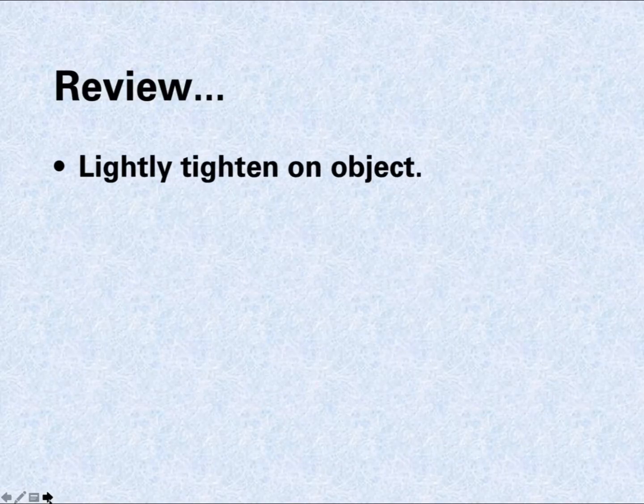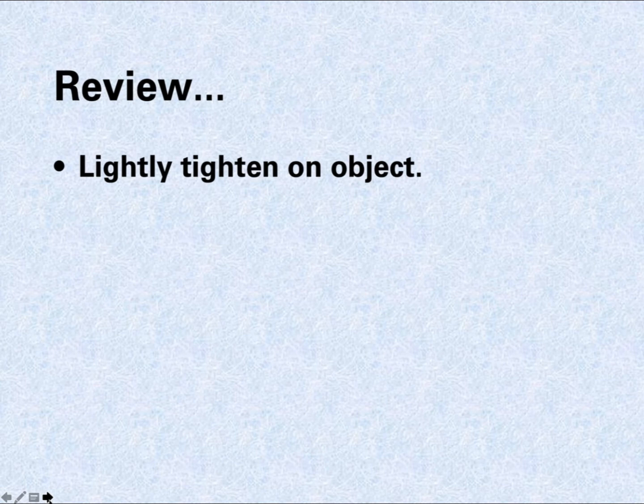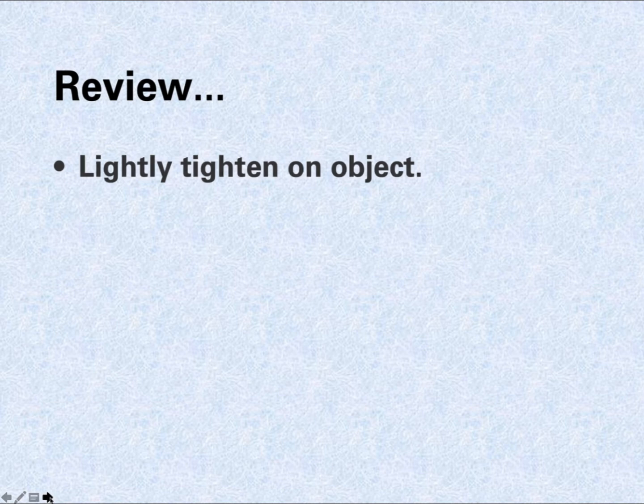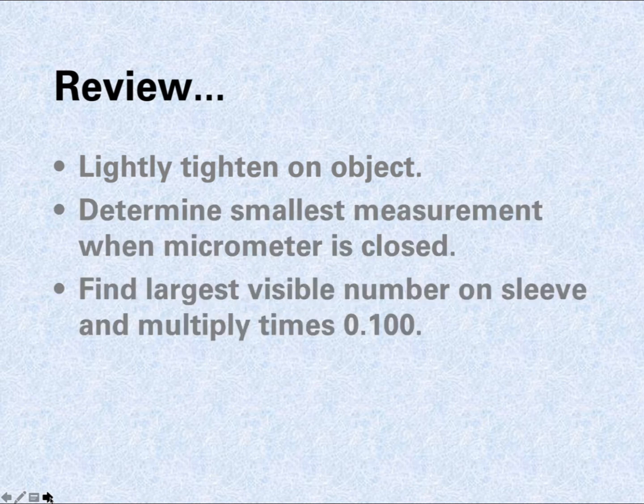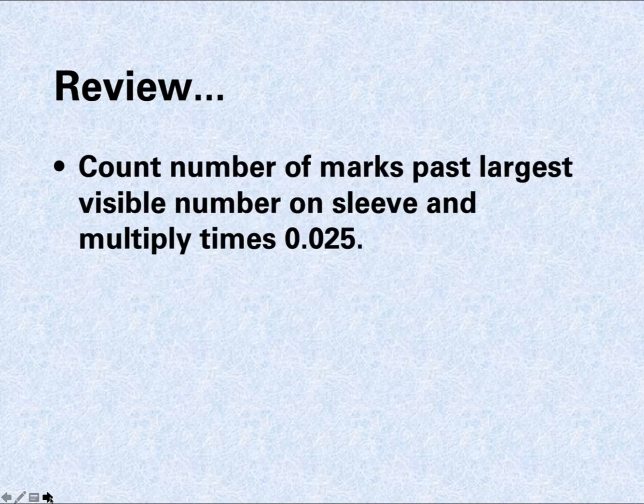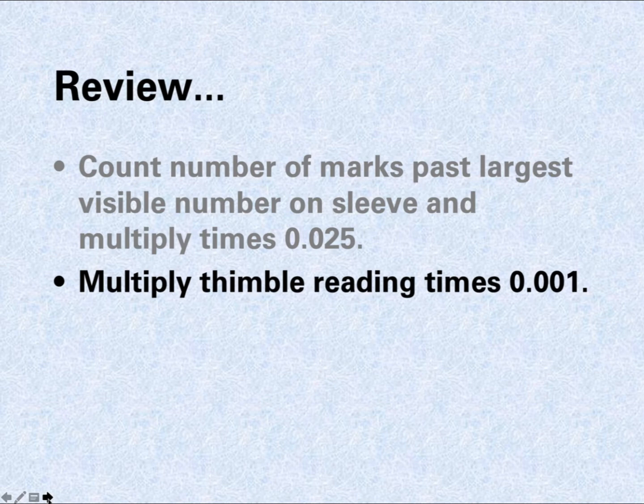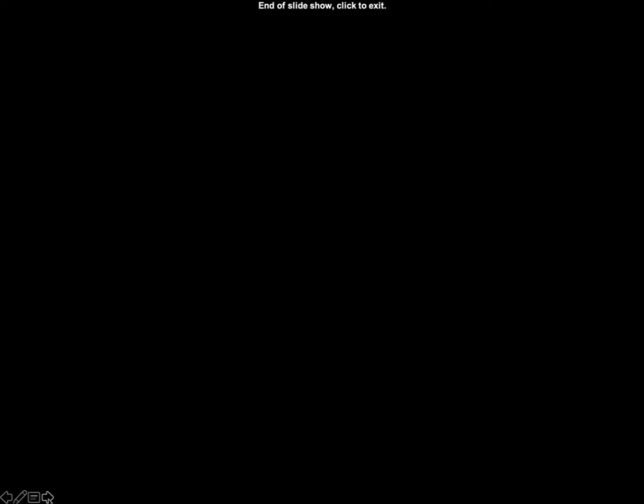So what do we learn here? You lightly tighten on the object. Now, if it's round and I'm going to do one, once we're done with this, I'm going to show you a little techniques because part of it is technique. So lightly tighten on the object. You've got to make sure that the object you're actually clamping it or tightening in the right spot. So if you're doing something round, we've got to make sure that we're square in it, in the highest spot. So we lightly tighten on the object using the friction clutch. Determine the smallest measurement when the micrometer is closed. And that's the first thing you're going to add on that math that you're going to show me. And then the first one is how many hundred thousands. And next one is how many 25 thousands. And then the last thing is how many one thousands. We add them all up and we get the answer.